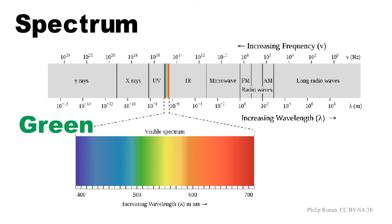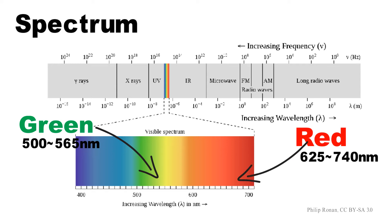Each color has a particular wavelength. For example, green light has a wavelength of 500 to 565 nanometers, whereas red has 625 to 740 nanometers. The sum of all wavelengths is called a spectrum. The spectrum of visible light ranges from 400 to 780 nanometers approximately.